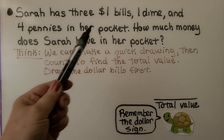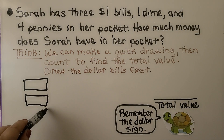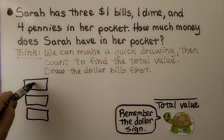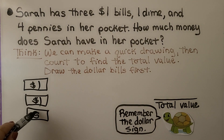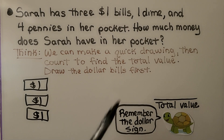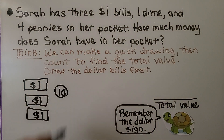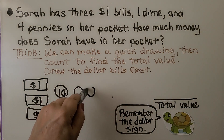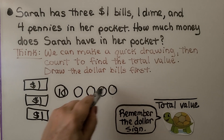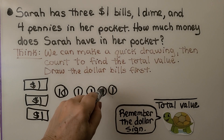It says she has three $1 bills, so we can make three rectangles and write $1 in each one. She has one dime, so we make a circle and put 10 inside. She has four pennies, so we draw four circles and put a 1 inside each one.